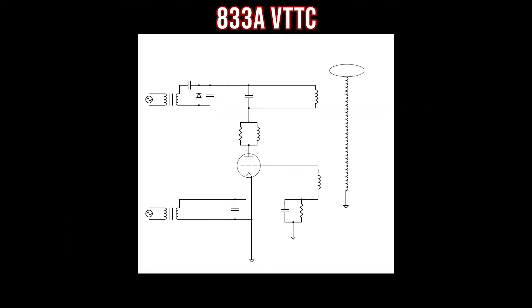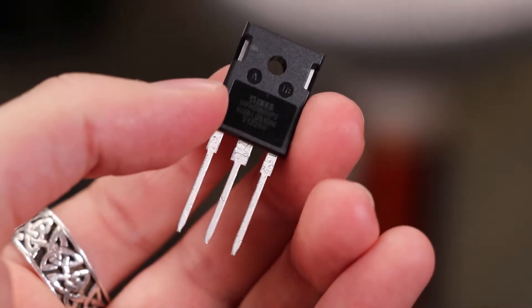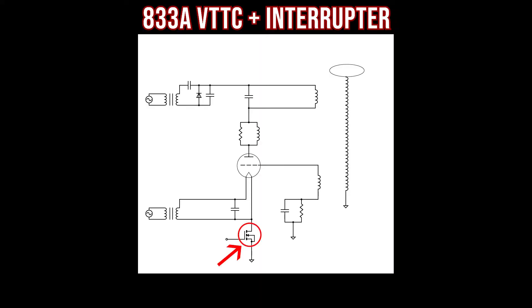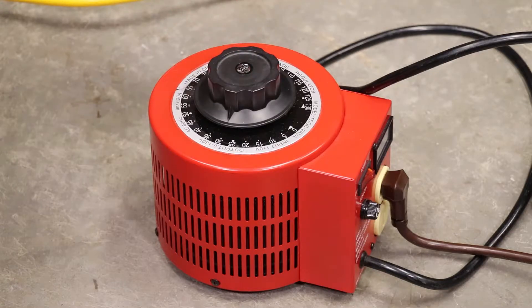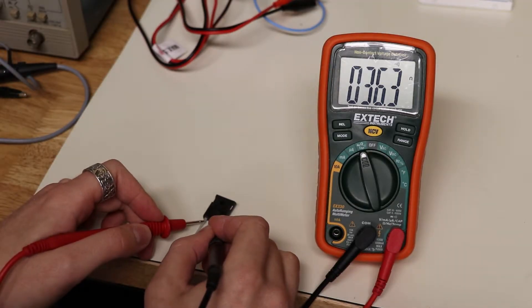We're using the 833A vacuum tube Tesla coil from before to do this, and the interrupting is done by adding this MOSFET in series with the circuit between the cathode of the tube and ground. Now we can modulate the coil based on a digital signal. I have to keep the input power from the variac turned way down though to avoid roasting this MOSFET. I already killed one of them doing this.